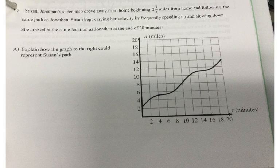For problem two, it says Susan, Jonathan's sister, also drove away from home beginning two and a third miles from home and followed the same path as Jonathan. She kept varying her velocity by frequently speeding up and slowing down. She arrived at the same location as Jonathan at the end of 20 minutes. So part A says explain how the graph to the right could represent Susan's path. It has the same start point, two and a third miles, the same end point, which is 20.